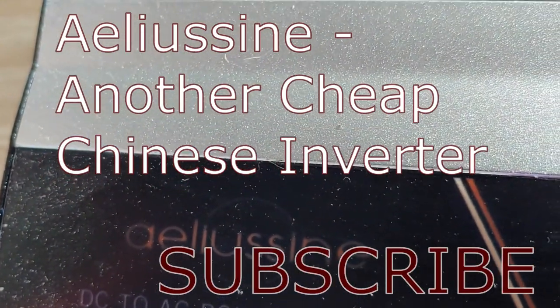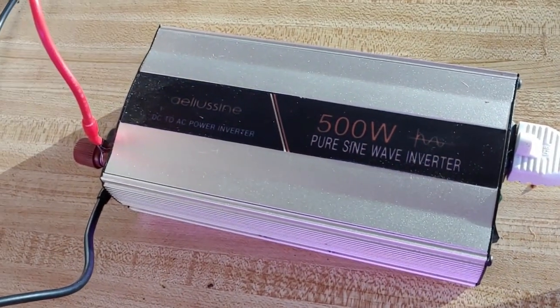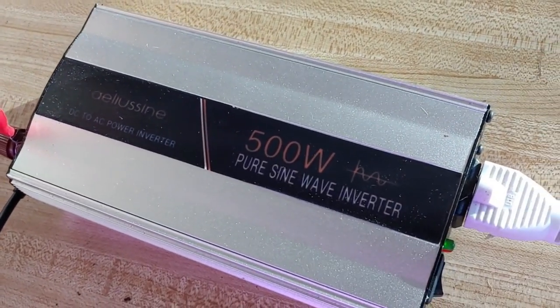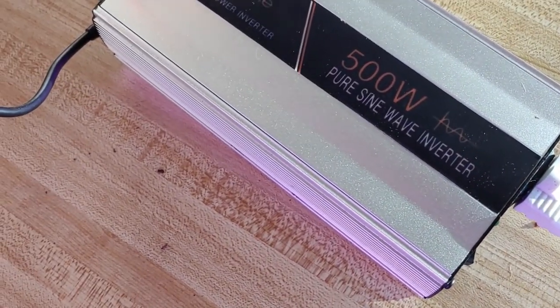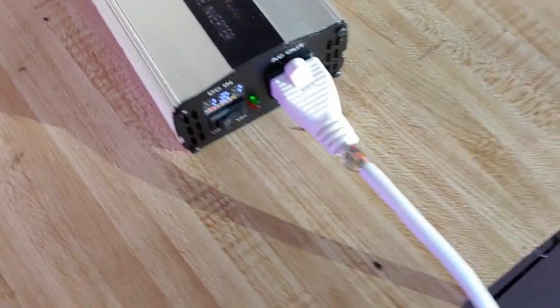This is just a cheap little inverter I bought off Amazon for 60-something bucks. It's 500-watt pure sine wave. I figured from the looks of it, it'd just be a little piece of junk. And actually, it's worked out very, very well.